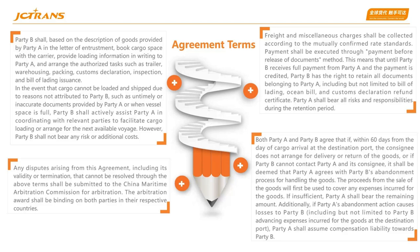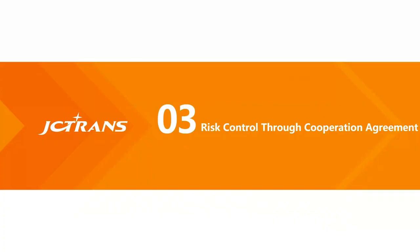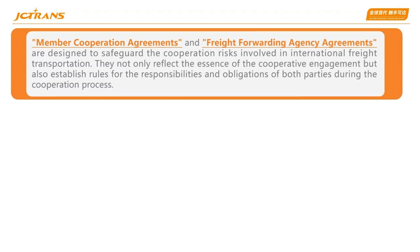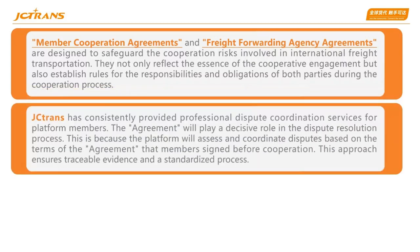The third part: risk control through the cooperation agreement. Member cooperation agreements and freight forwarding agency agreements are designed to safeguard the cooperation risks involved in international freight transportation. They not only reflect the essence of cooperative engagement but also establish rules for the responsibilities and obligations of both parties. JC Trans has consistently provided professional dispute coordination services for platform members. The agreement will play a decisive role in the dispute resolution process, as the platform will assess and coordinate disputes based on the terms of the agreement that members signed before cooperation. This approach ensures traceable evidence and a standardized process.